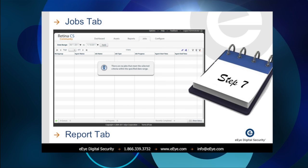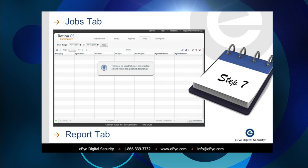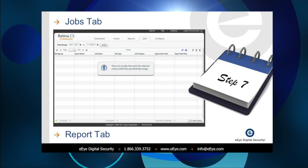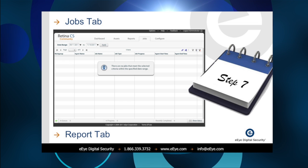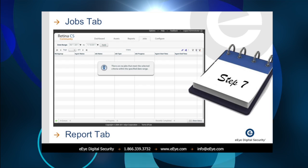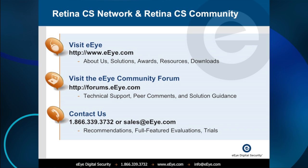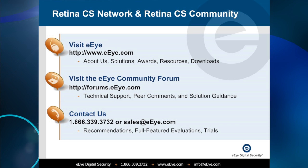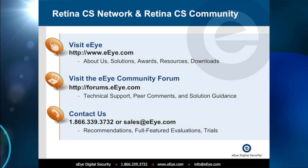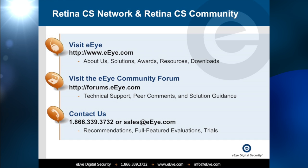The Retina CS Community Edition will then display the job on the Job screen and make the report available on the Reports tab once the scan is complete. For more information on EI Digital Security or the Retina CS Community Edition, please visit us on the web at www.eeye.com or call us at 1-866-339-3732. Thank you.